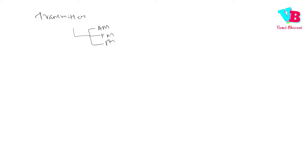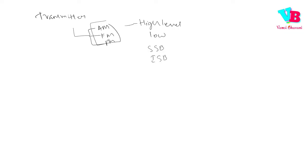We will discuss AM Transmitters in this broad division. AM Transmitters are of 4 types: the first one is High Level Transmitters, next is Low Level, then Single Sideband Transmitters, and ISB Transmitters. Single Sideband transmitters also include the suppressed carrier type. We will discuss these 4 types of AM Transmitters.